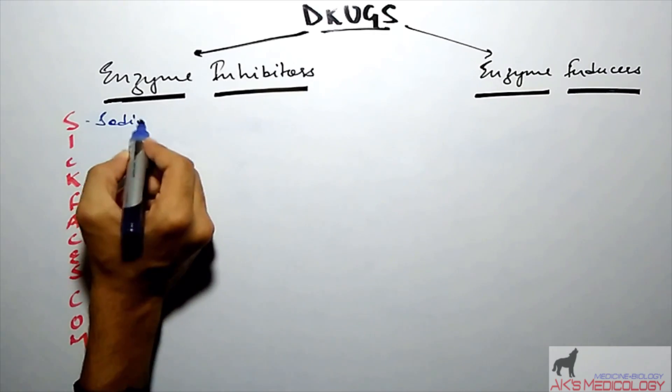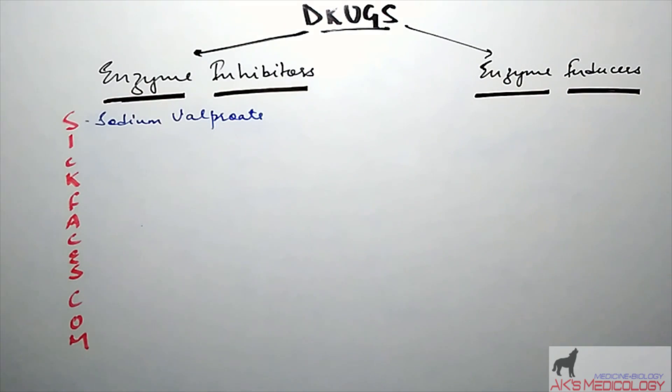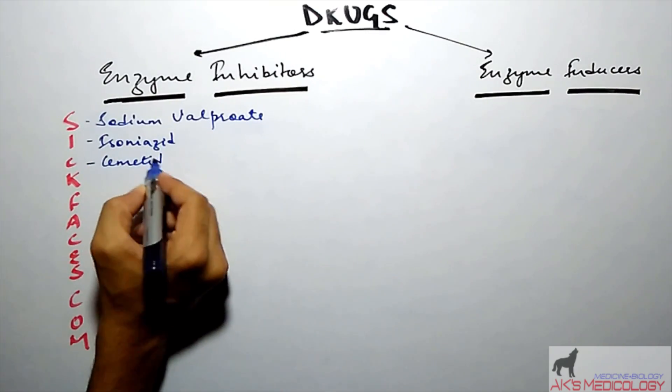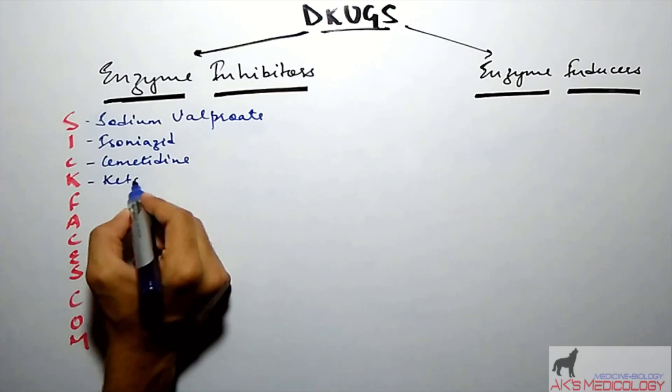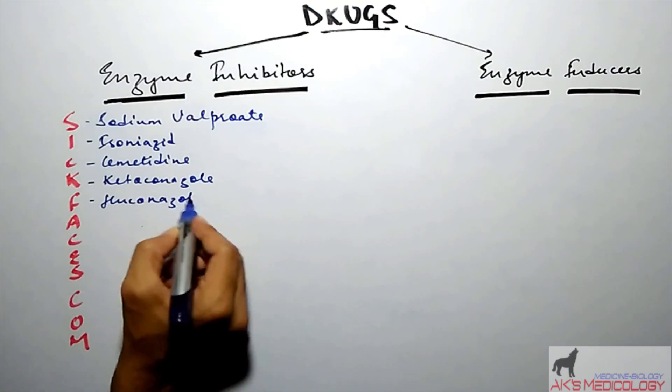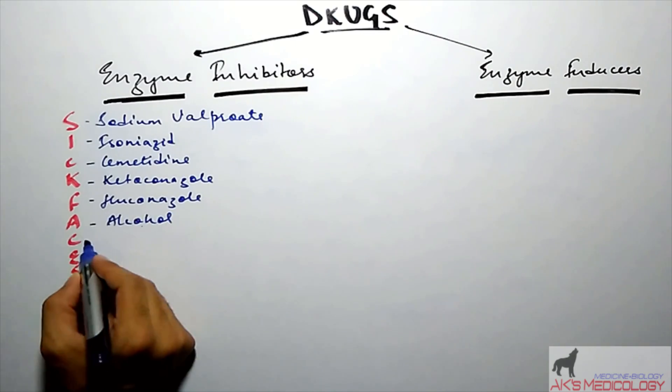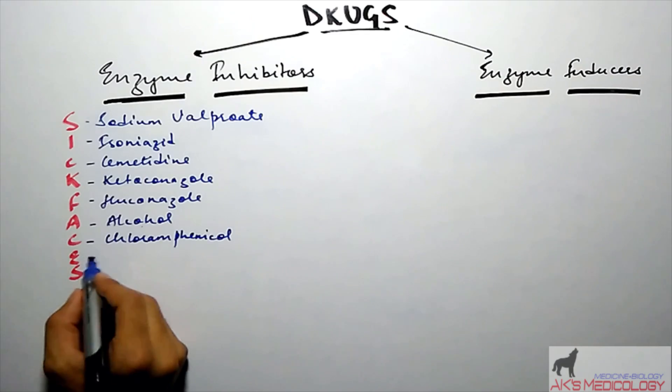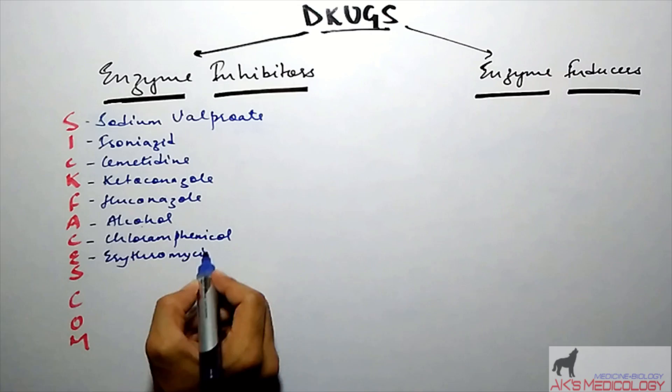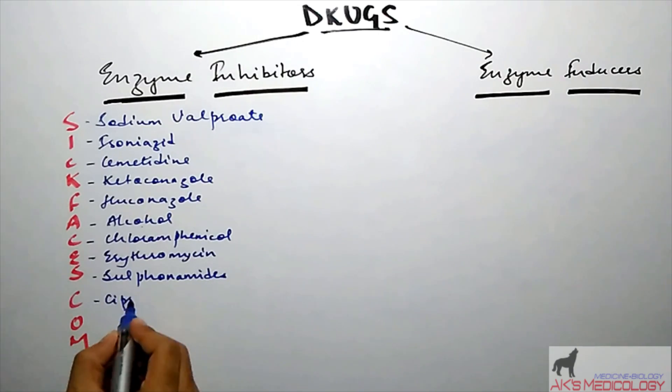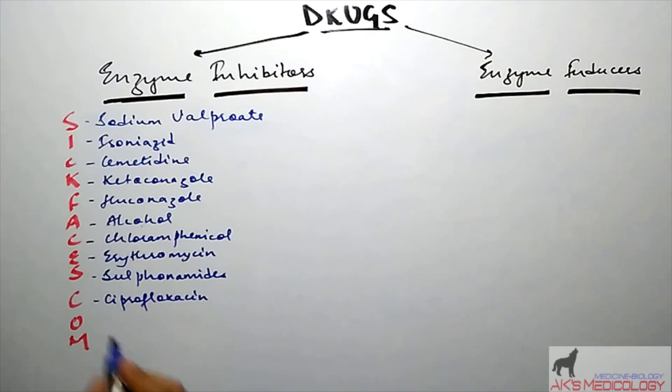S means sodium valproate or valproic acid, I means isoniazid, C means cimetidine, K means ketoconazole, F is fluconazole, A means alcohol, C here stands for chloramphenicol, E is erythromycin, S are sulfonamides, C is ciprofloxacin, O is omeprazole, M is metronidazole.